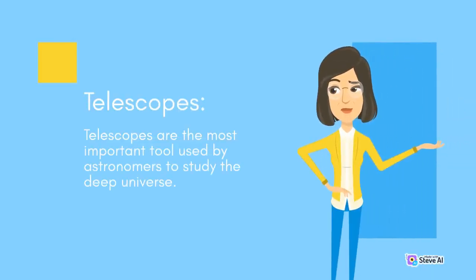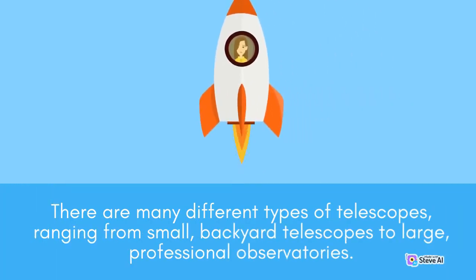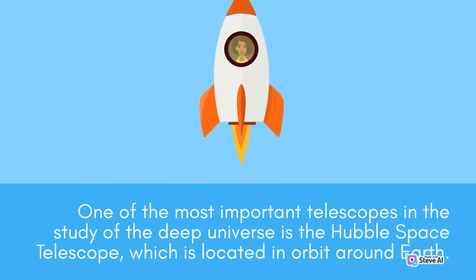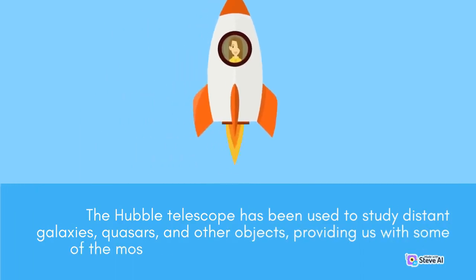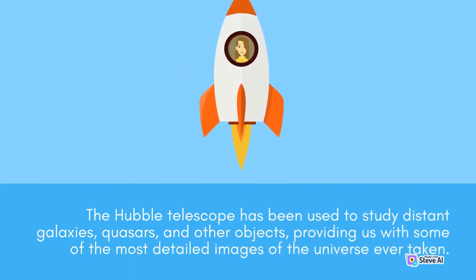Telescopes are the most important tool used by astronomers to study the Deep Universe. There are many different types of telescopes, ranging from small backyard telescopes to large professional observatories. One of the most important telescopes in the study of the Deep Universe is the Hubble Space Telescope, which is located in orbit around Earth. The Hubble Telescope has been used to study distant galaxies, quasars, and other objects, providing us with some of the most detailed images of the Universe ever taken.